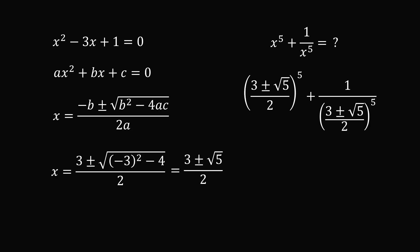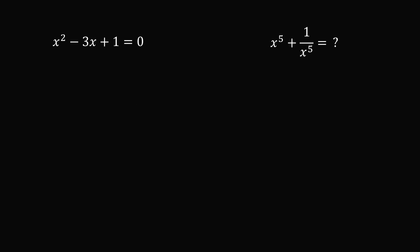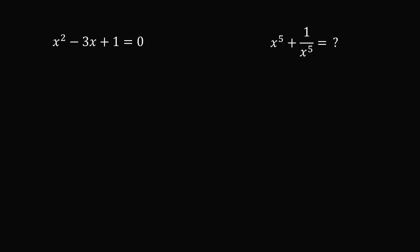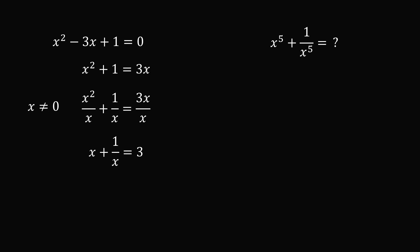So is there a better way to solve this? Start with x squared minus 3x plus 1 is equal to 0. You first want to make sure that x equals 0 is not a root. If we substitute x equals 0, we get 0 minus 0 plus 1 equals 1, so x equals 0 is not a root. We can safely divide both sides by x. Let's rearrange: add 3x to both sides to get x squared plus 1 equals 3x. Now divide both sides by x to get x squared over x plus 1 over x equals 3x over x, which simplifies to x plus 1 over x equals 3.